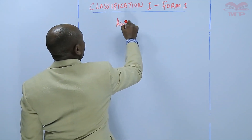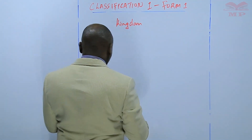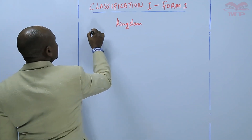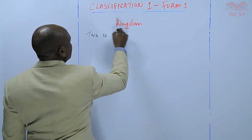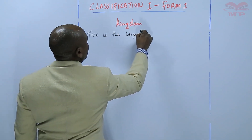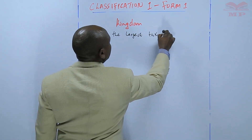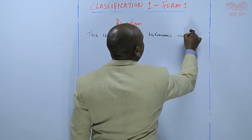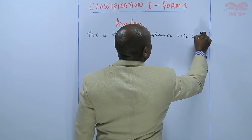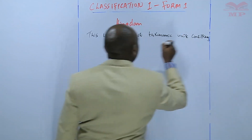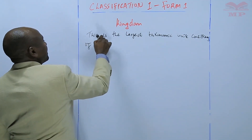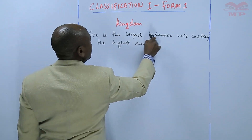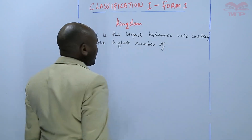Let us look at what a kingdom is. We can say that this is the largest taxonomic unit consisting of the highest number of organisms.